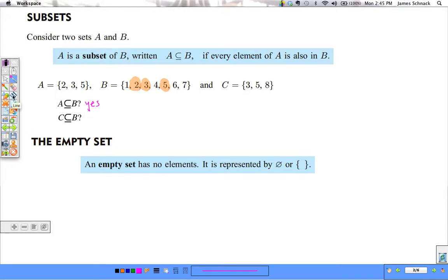A is a part of it, in other words. Now, is C a subset of B? C contains 3, 5, but 8 is not in B. And since all of C is not inside B, C is not a subset of B. It shares some elements, but not all of them.